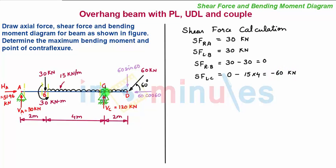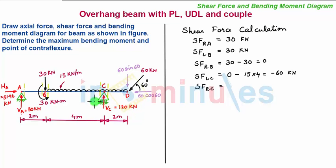We move the section beyond point C by taking a section towards the right of C and very near to it. The shear force towards the right of C: the only addition of force when moving from the previous section is an upward force of magnitude 120 kN. An upward force on the left-hand side is positive, so we get minus 60 plus 120, giving a value of 60 kN.